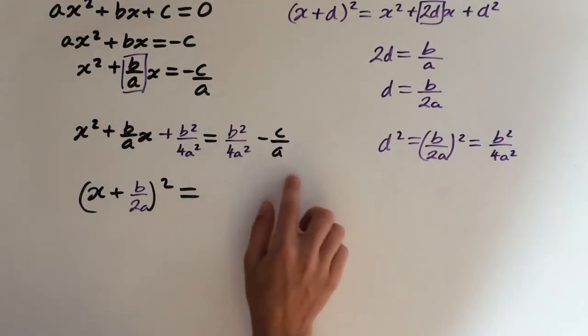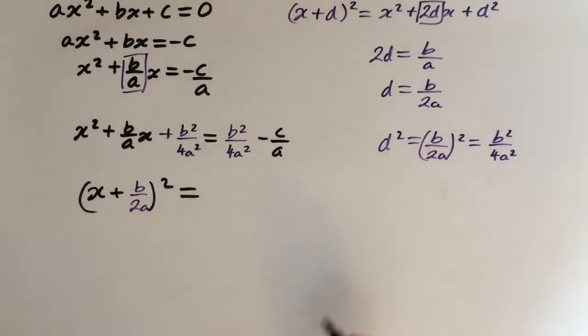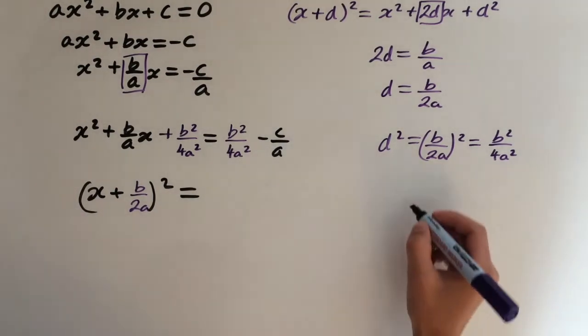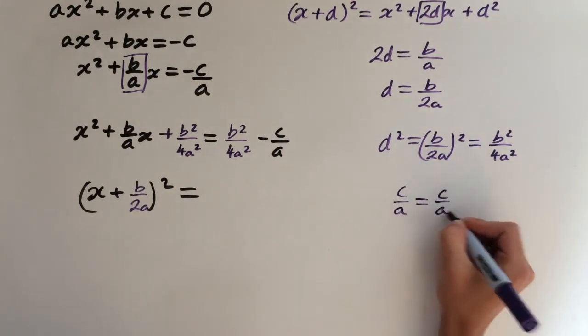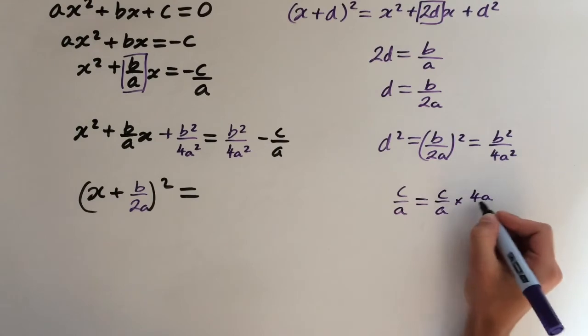And the right hand side, we want to get it all over one fraction, so we need to find the common denominator. If we look at c over a, this is the simplest fraction, and we multiply it by 4a over 4a.